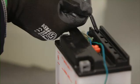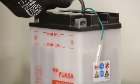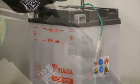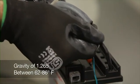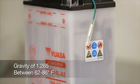Always wear protective eyewear and gloves when working with electrolyte. The electrolyte should have a specific gravity of 1.265 and be between 60 and 86 degrees Fahrenheit.